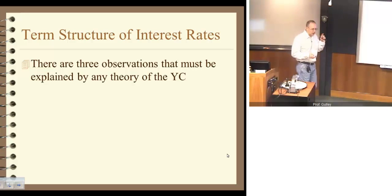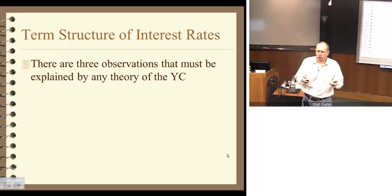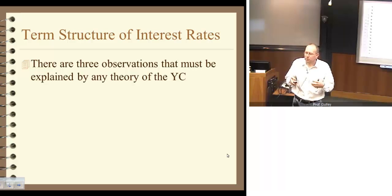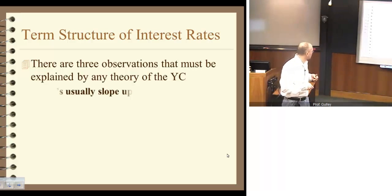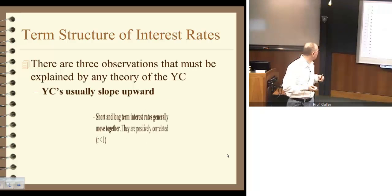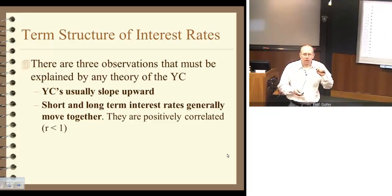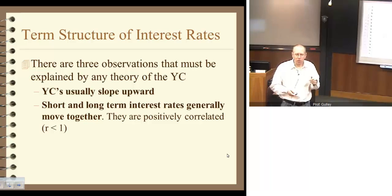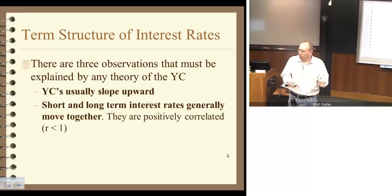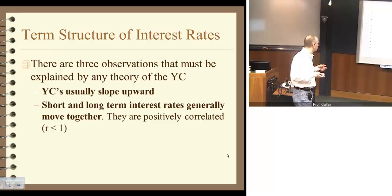We want to develop theories to explain commonly observed facts of the yield curve. We have three such facts. First, yield curves usually slope upward — short-term interest rates are usually lower than long-term interest rates. Second, interest rates along the yield curve tend to move together. Not perfectly and not 100% of the time, but enough so that on average, when short-term interest rates rise, long-term interest rates tend to rise as well. Yield curves, more or less on average, shift up and down together in parallel.